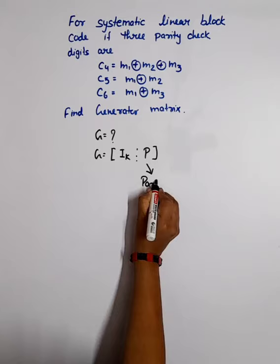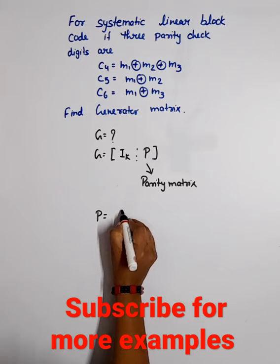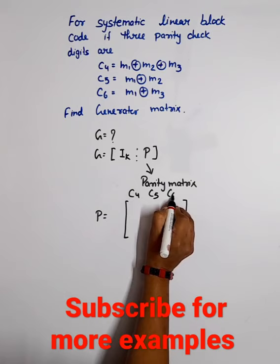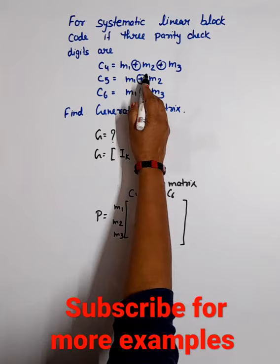First we find the parity matrix. The parity matrix columns are C4, C5, C6, and the rows are message bits M1, M2, M3. For C4, M1 and M2 are available, so we have 111.